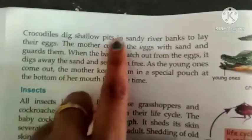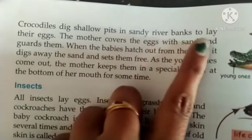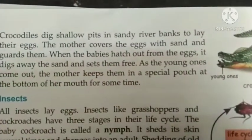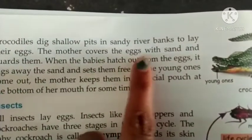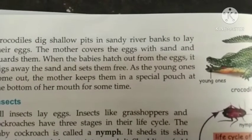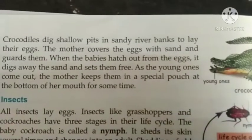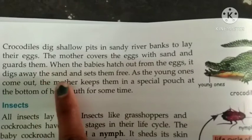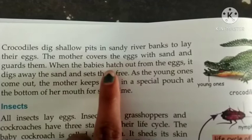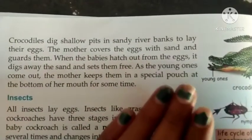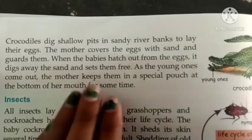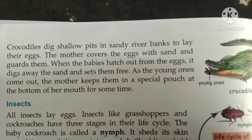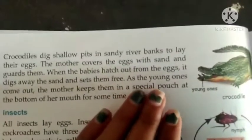Crocodiles dig a shallow pit in the sandy river bank to lay their eggs. The mother covers the eggs with sand and guards them. She buries them completely inside. When the babies hatch out from the eggs, they dig away the sand and come out — because the eggs were buried underground, the hatchlings must break out of the egg and also push through the sand to emerge.